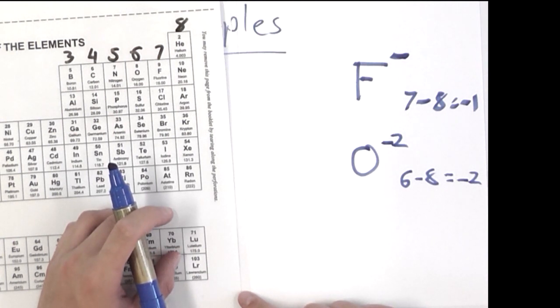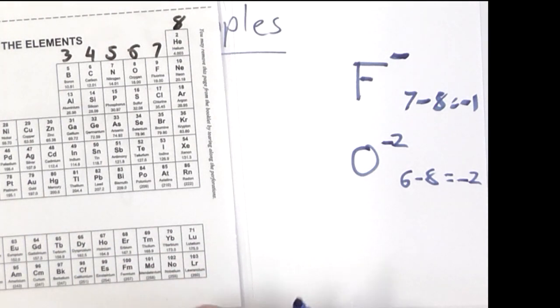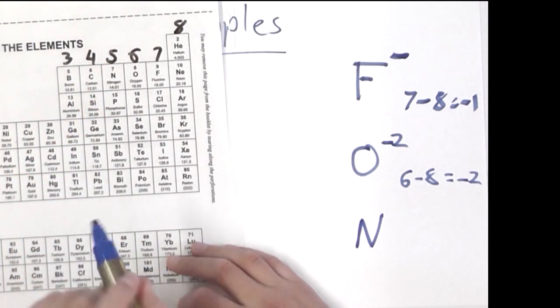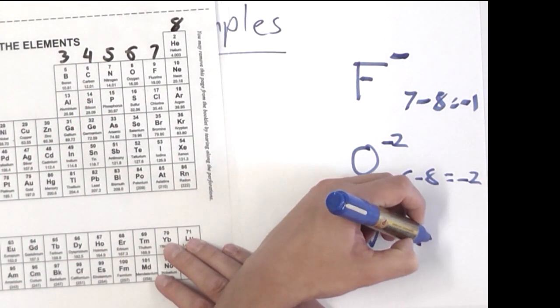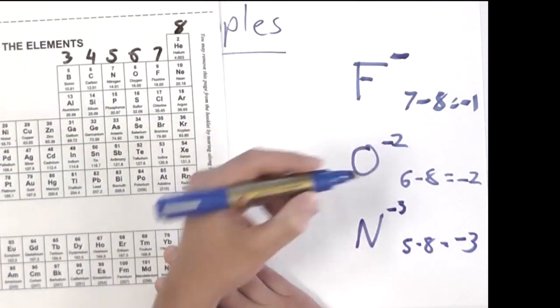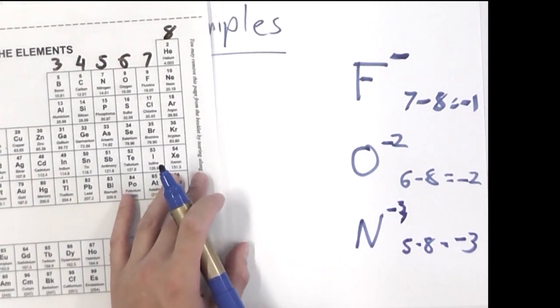So again, this works pretty well for most of the non-metals that we're going to be dealing with. If we look at nitrogen as another example, it's in group 5. So 5 take 8, that gives us minus 3. So the nitride ion is a minus 3 ion. Sorry about my 3 there.